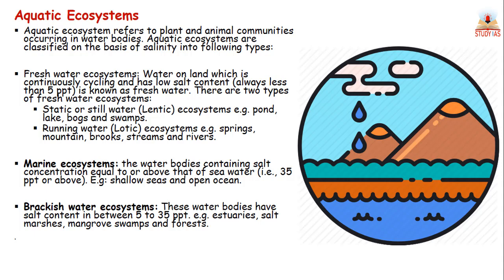Examples of freshwater ecosystems include lakes, pools, ponds, springs, streams, and rivers. The second type is the marine ecosystem.